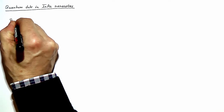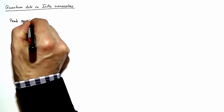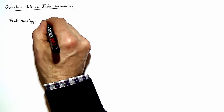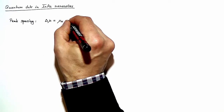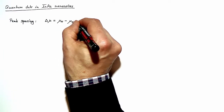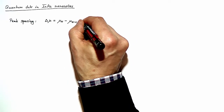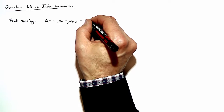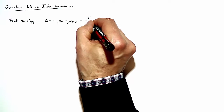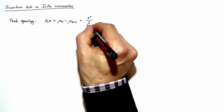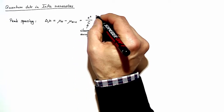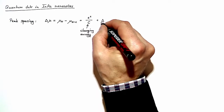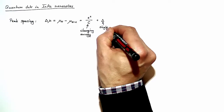We will look at the peak spacing, which we have seen in lectures to be given by delta mu. Delta mu is given by the electrochemical potential for n electrons minus the electrochemical potential for n minus 1 electrons. This expression is the sum of two terms: a charging energy term e squared over the capacitance of the dot, plus the single-particle level energy delta, which we identify with the single-particle level spacing.